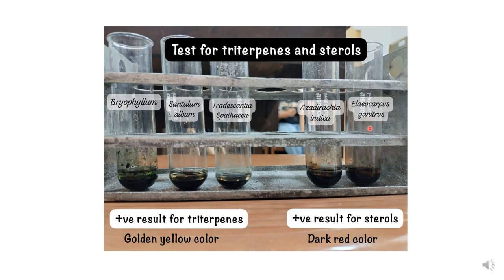Two additional plants — Azadirachta indica (neem) and Elaeocarpus (rudraksh) — show a positive test for sterol, indicated by a bright red color in the chloroform layer. So these two plants show positive sterol results, while the three previously mentioned plants show positive triterpene results.